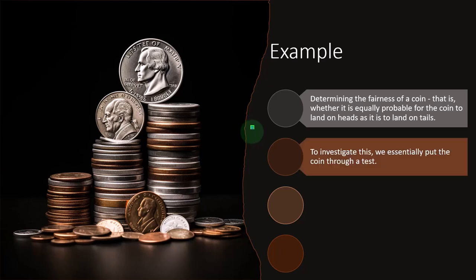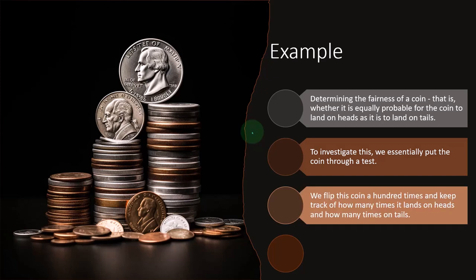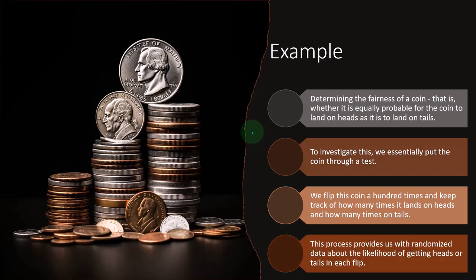To investigate this, we essentially put the coin through a test. We flip it 100 times and keep track of how many times it lands on heads and how many times it lands on tails. This process provides us with randomized data about the likelihood of getting heads or tails in each flip.